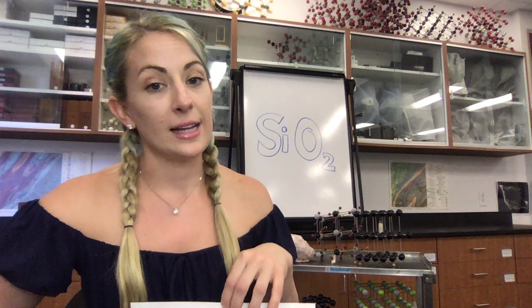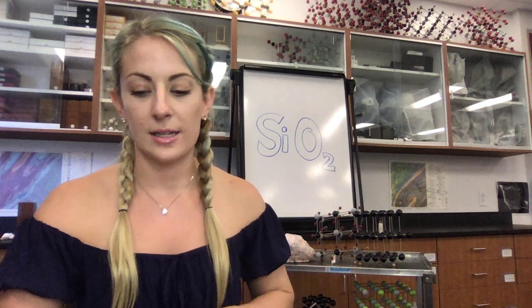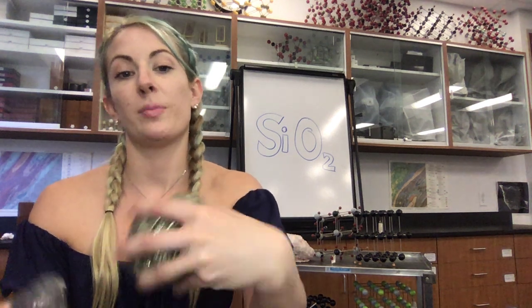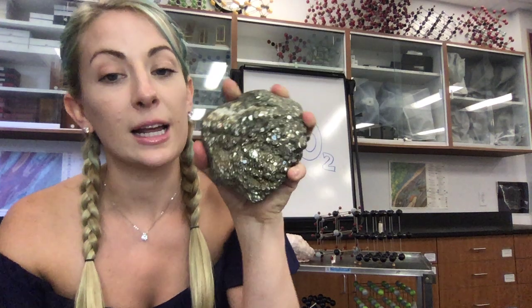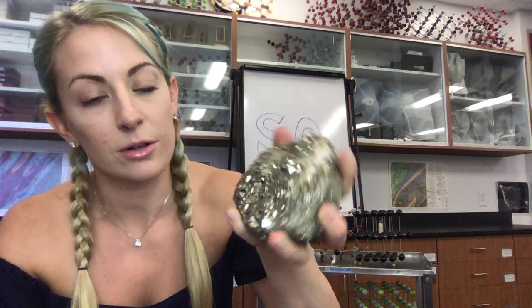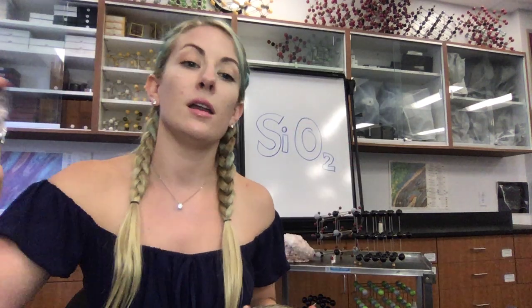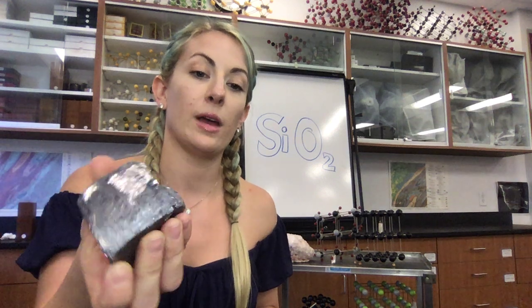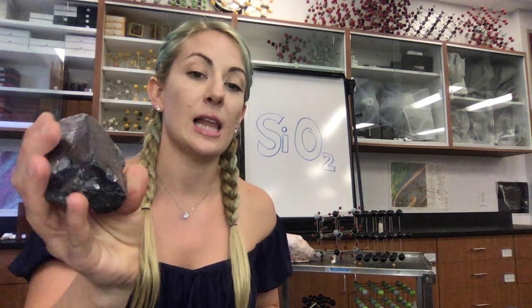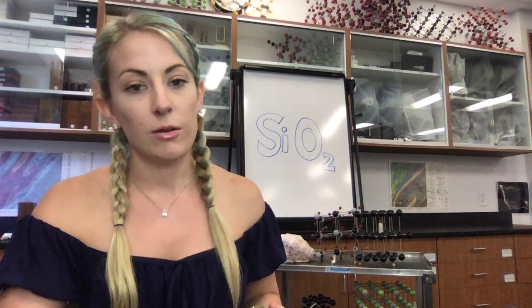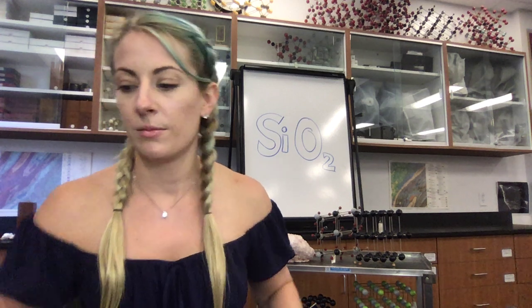For the sulfides, it's sulfur and something else. Here we have a couple of sulfides. Remember pyrite is an iron sulfur, so this is in our sulfides group. And here we have a specimen that has lead and sulfur. So sulfides is going to have sulfur in it.